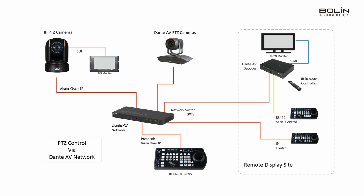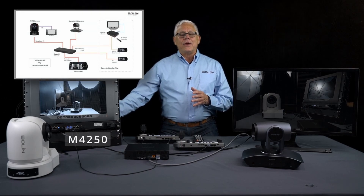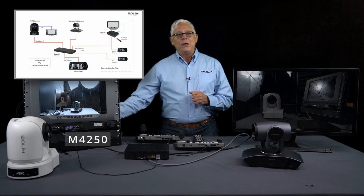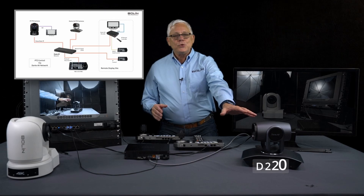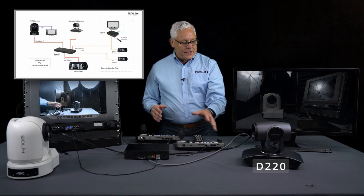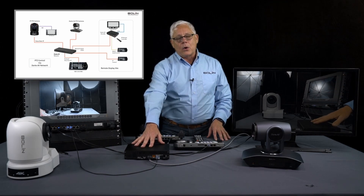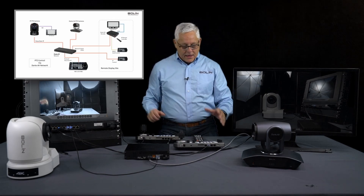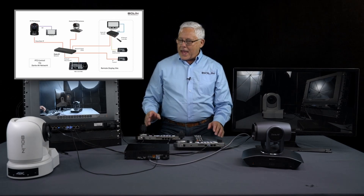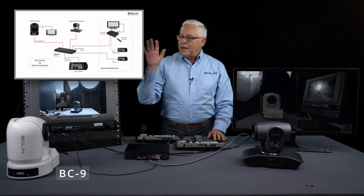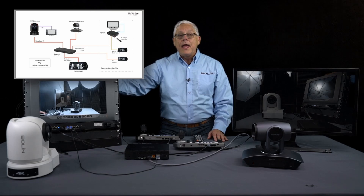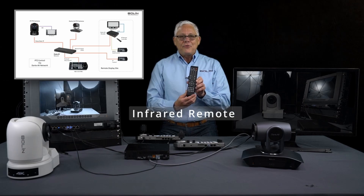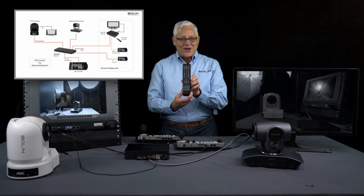Here is a diagram showing what is in our Dante AV network today. We start with our Netgear M4250 PoE++ switch, which is sending PoE++ power to the Dante AV Ultra gear as well as PoE to our keyboards and our guest camera. We have our D220 full HD Dante AV native camera sending its signal to the switch. The switch is then connected to our D20 transceiver, which is a decoder today, with an HDMI cable coming out to this HDMI monitor. I have two of our KBD-1010 keyboards, our guest camera — the flagship BC-9 baseband camera — sending SDI out to our SDI monitor with one additional cable for power and network connection. And I have our infrared remote control.